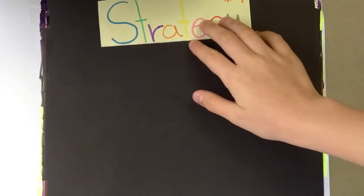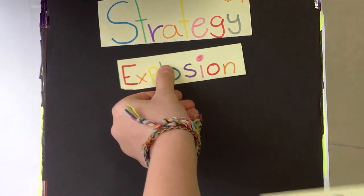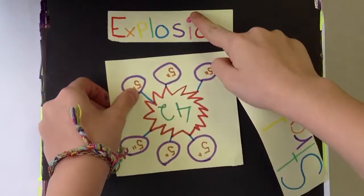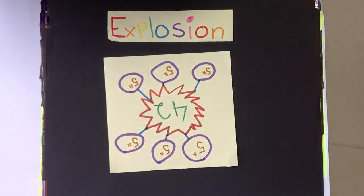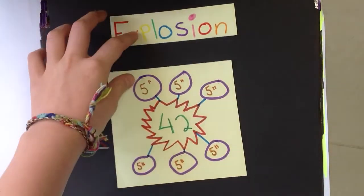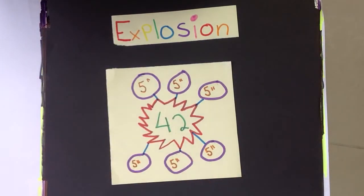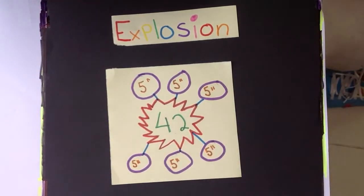Strategy number one, the explosion. So today I have been making this explosion that's not a real math method. It's only to understand the problem. So as you know that the biggest number is 42 in the middle. You will draw six little circles around it for the six in the story problem.